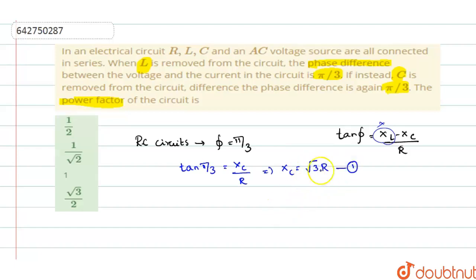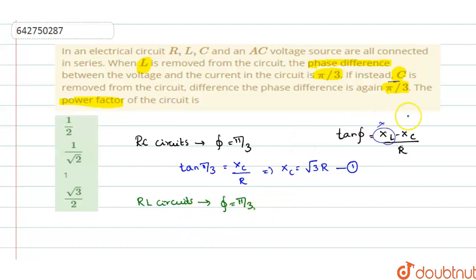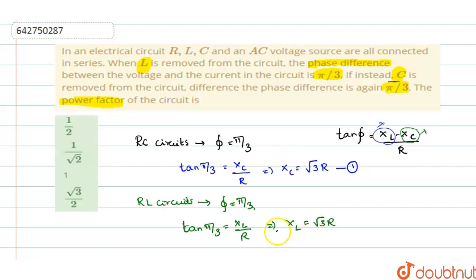Similarly, when C is removed, RL remains. In the RL circuit, the phase difference is also π/3. XC is removed, and only XL remains. So tan(π/3) = XL / R, which gives XL = √3 · R. We now have both XL and XC values. Call this equation 2.